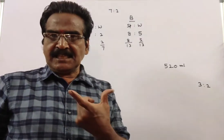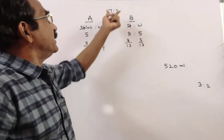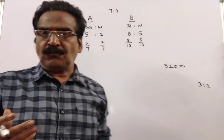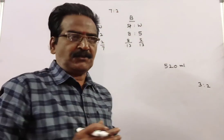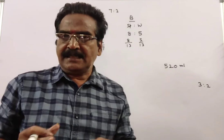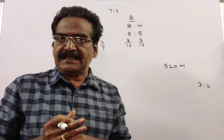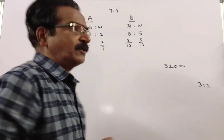And these two solutions are taken in the ratio 7 is to 2 to form a resultant solution. Let us see the ratio of spirit and water in the resultant solution.